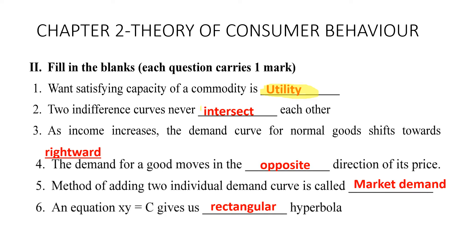We have seen this in the features or properties of indifference curves. Third: as income increases, the demand curve for normal goods — not inferior goods — shifts towards the right.